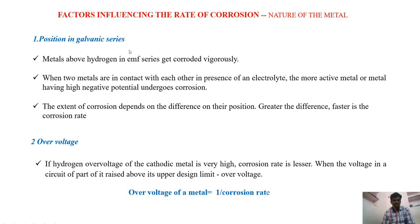The first one is the galvanic series. Metals which are kept above hydrogen in the EMF series can be corroded very easily and quickly. If we place two dissimilar metals in an electrolyte, then the metal which is having more negative potential can be corroded very quickly compared to the other electrode. The rate of corrosion highly depends upon the distance between these two electrodes. If the distance is more, then corrosion will become more because of the flow of electrons.